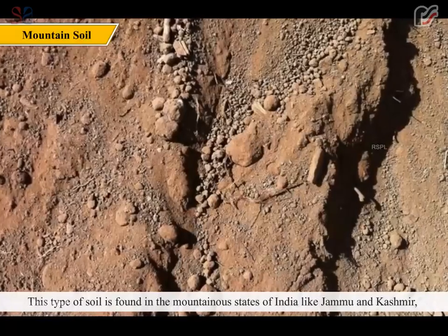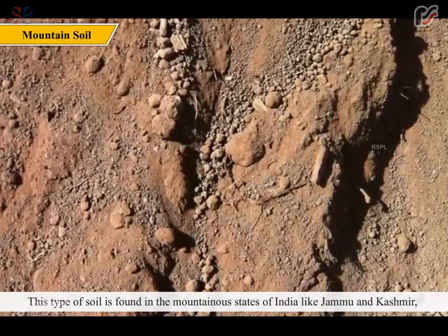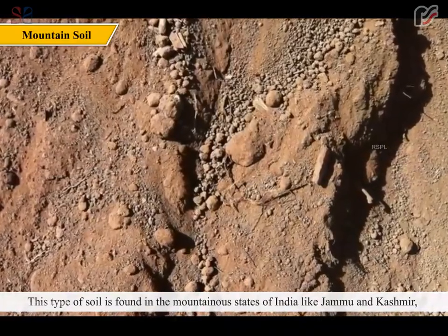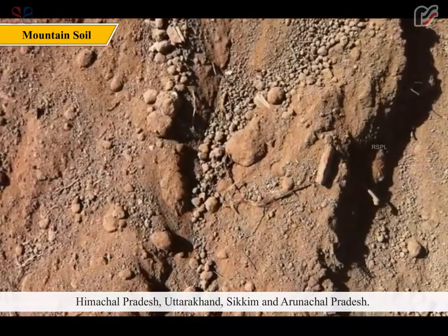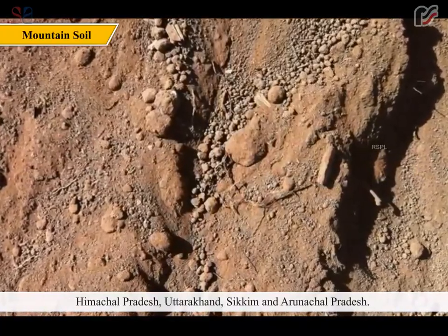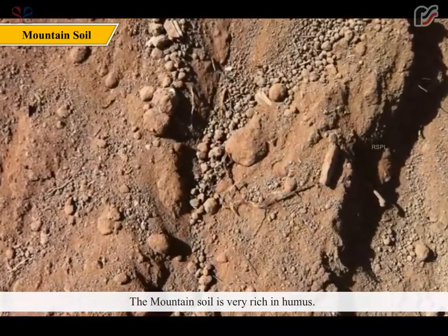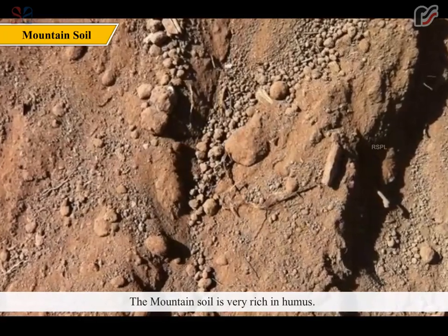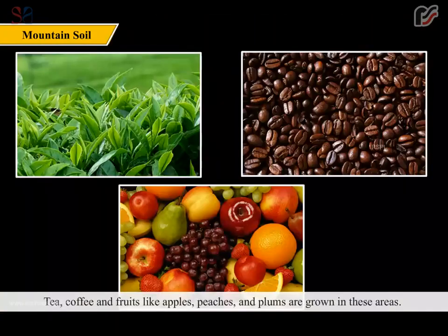Mountain soil is found in the mountainous states of India like Jammu and Kashmir, Himachal Pradesh, Uttarakhand, Sikkim and Arunachal Pradesh. The mountainous soil is very rich in humus. Tea, coffee and fruits like apples, peaches and plums are grown in these areas.